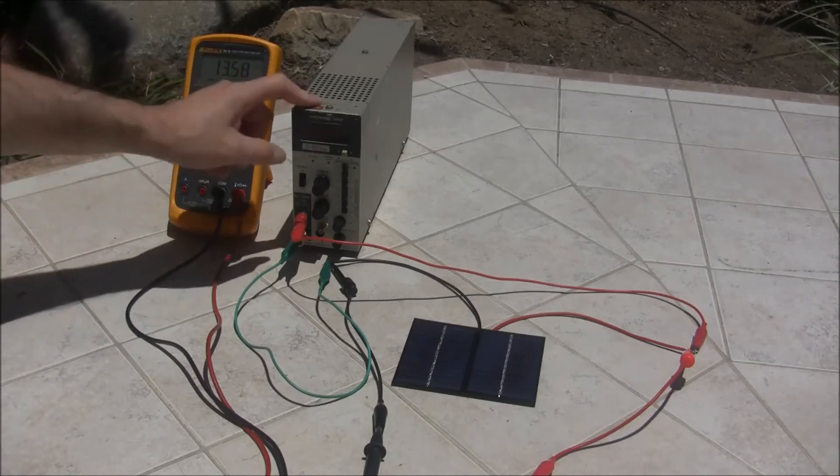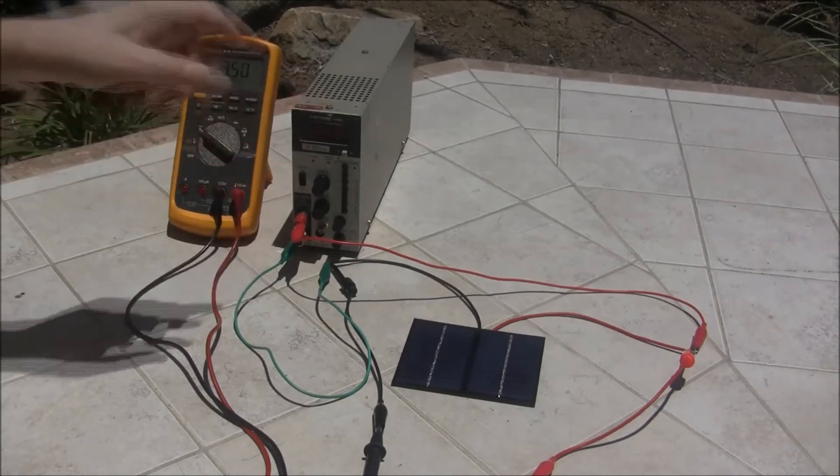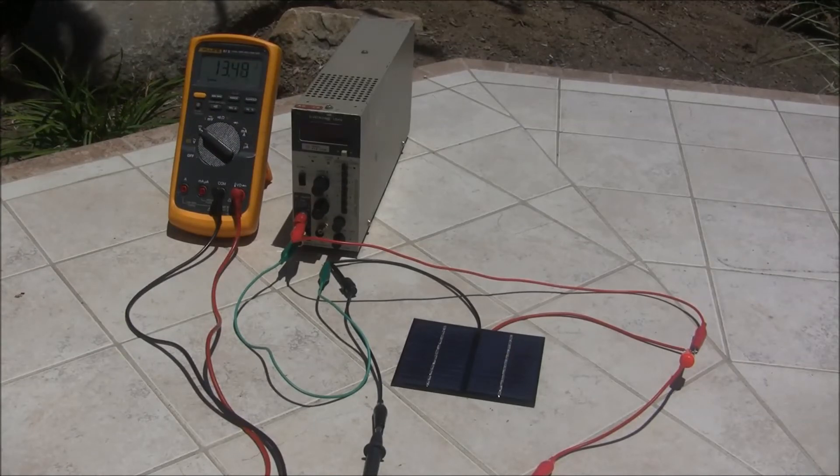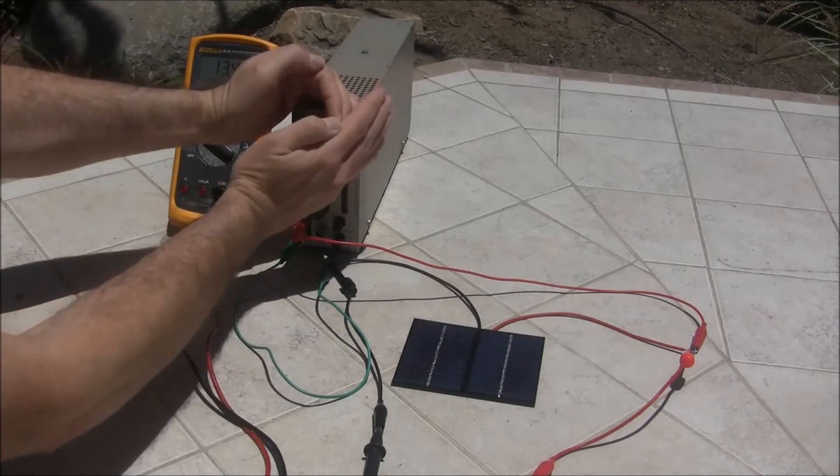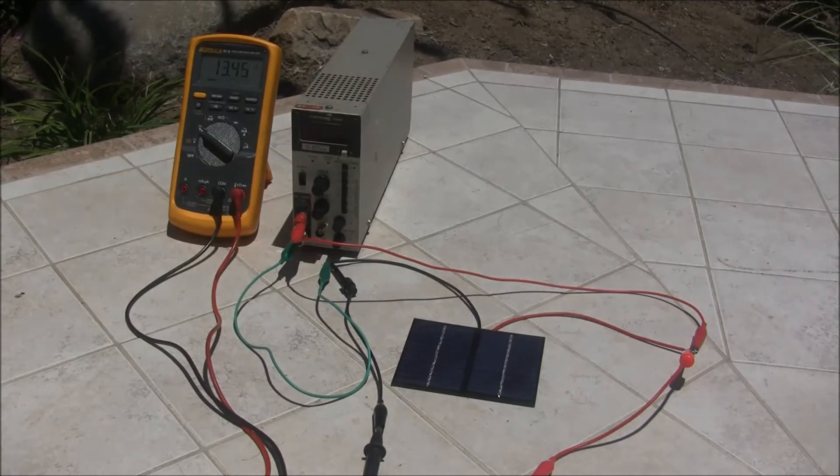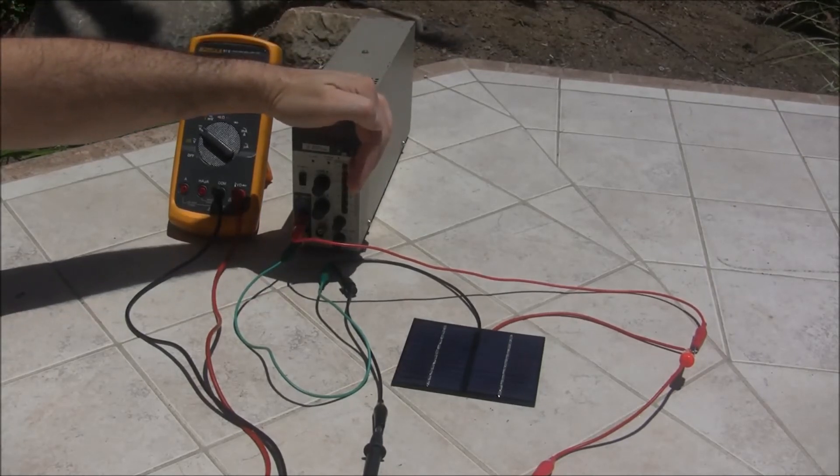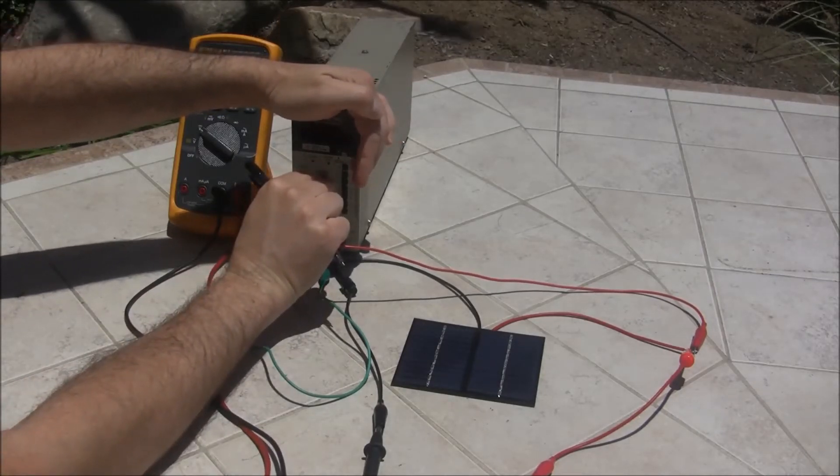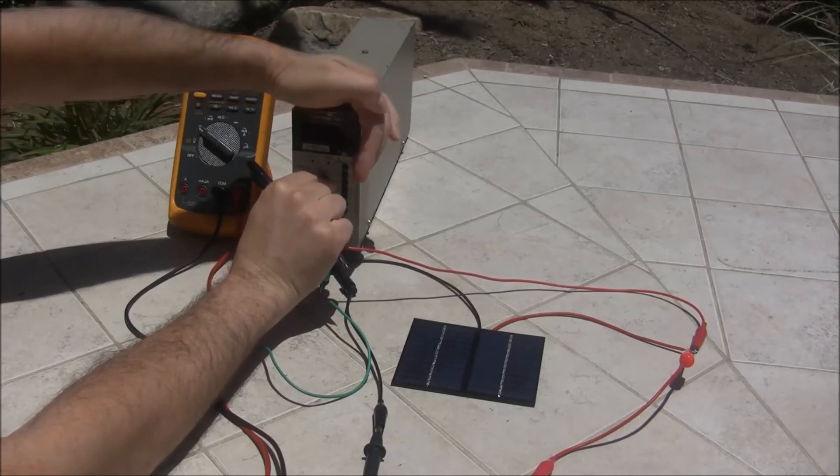What we're going to do now is turn on the load. The load will turn on after I reset the GFCI that it's plugged into. Apparently I haven't used this outlet in a while. Turning on the electronic load, it is kind of hard to read because it's right in the sun. I can't really do anything about this, so I'll just narrate where we're at. I'm going to turn the load up to 50 millivolts.